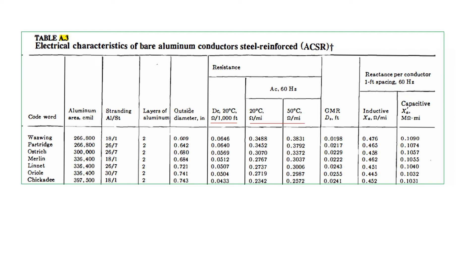Table 1.3 is used for conductor data. It lists DC resistance given at 20 degrees centigrade, calculated per 1000 feet. AC resistance is given at both 20 degrees and 50 degrees centigrade, with values calculated per mile.